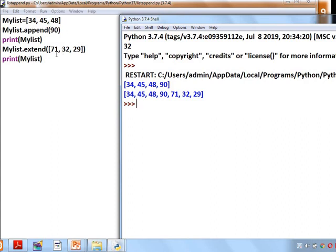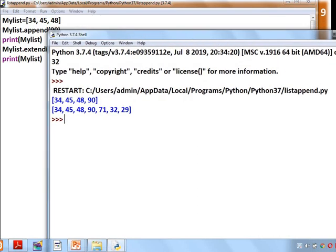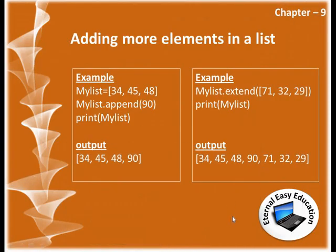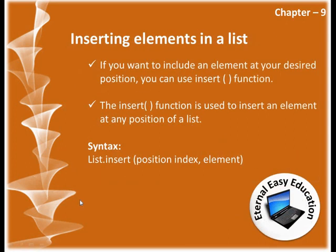But there may be a need to add an element at a particular index value - how to do it? If you want to include an element at your desired position, you can use the insert function. The insert function is used to insert an element at any position in a list. The syntax is: list.insert(index_position, element).